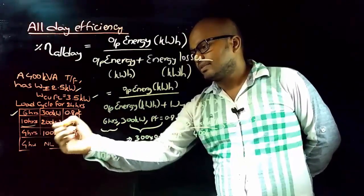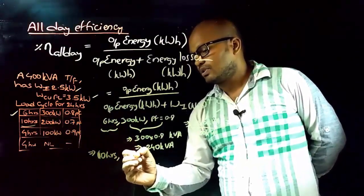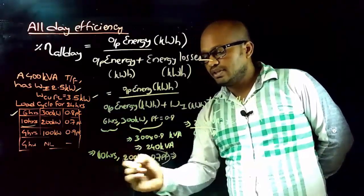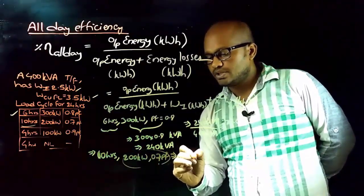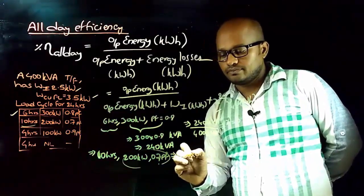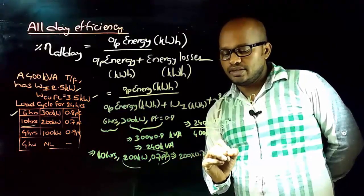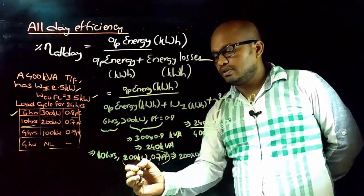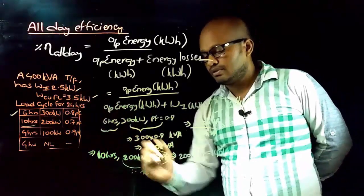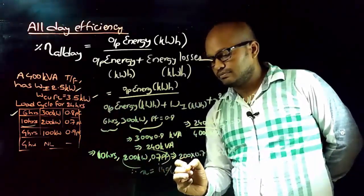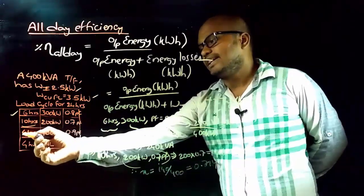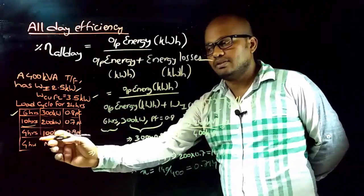Similarly, for the next 10 hours, the transformer output is 200 kilowatts at 0.7 power factor. Dividing 200 by 0.7 gives 140 kVA. Therefore, the loading on the transformer is 140 divided by the transformer rating, which equals x = 0.714.